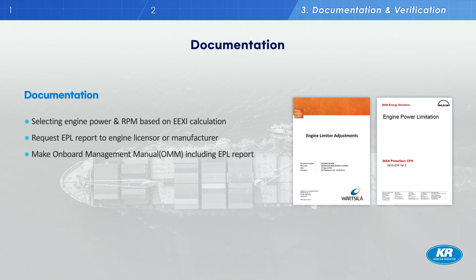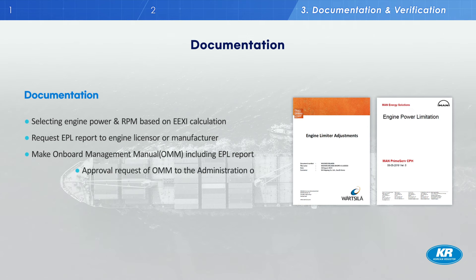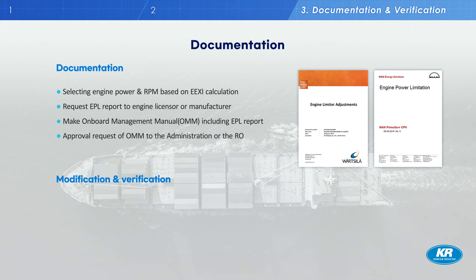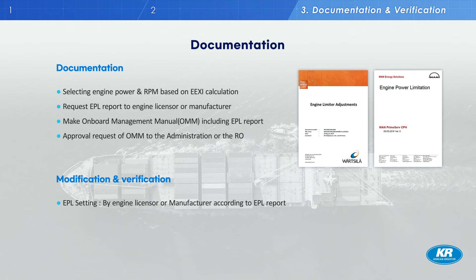Third, create an onboard management manual, which is called OMM, by referring to the EPL report received from the engine licensor or manufacturer. The contents of the OMM are detailed in the relevant MEPC document — please refer to MEPC 76-7-4, Annex 3, Section 4. Then submit the OMM to the RO for approval. Once the EEXI technical file and OMM are approved, the shipping company should request the EPL work to be carried out by the engine manufacturer. The service engineer will carry out the power limitation work mentioned in the OMM and EPL reports, and then the RO surveyor will check the result.